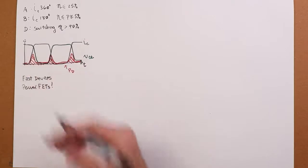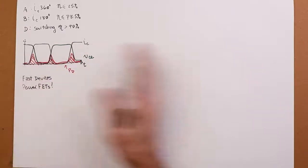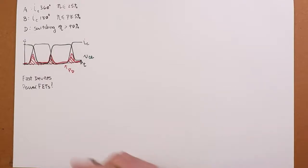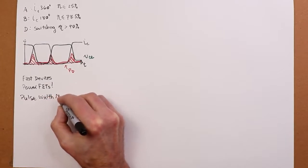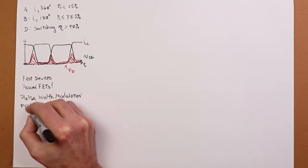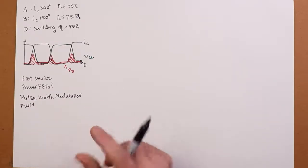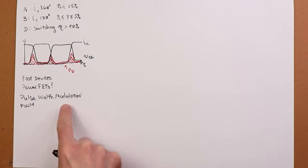So if we think about that, we need a fast device, good rise and fall times. What's a fast device? Power FETs. Power FETs are great for this. Very often we'll see power FETs, enhancement mode type power FETs, being used here. How do we make use of this idea? I mean, after all, I can't just run an audio signal in and just produce pulses. That's just gross distortion. Well, we're going to use something called pulse width modulation, or PWM.